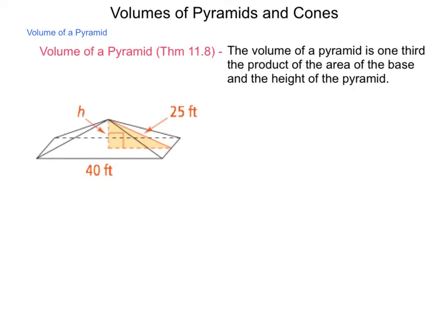So from a written perspective, what this formula would look like is V equals one-third the base area times the height.